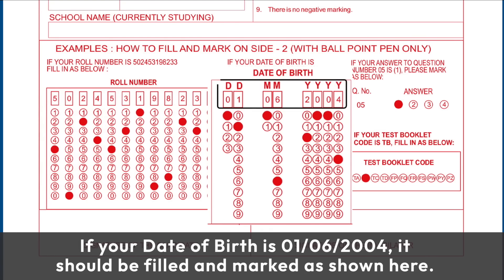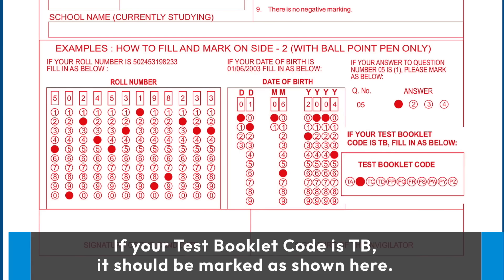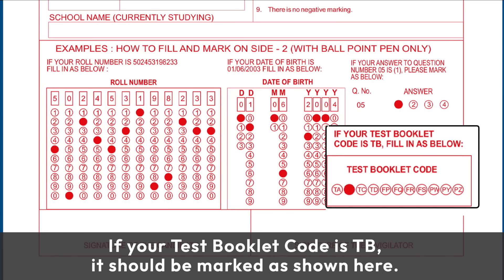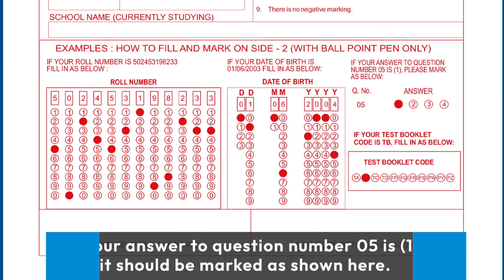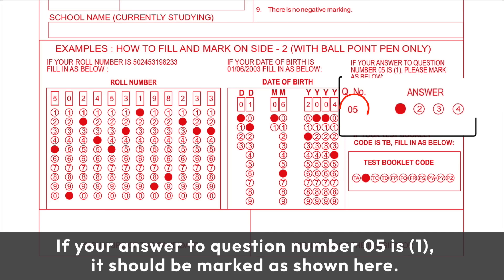If your date of birth is 1st June 2004, it should be filled and marked as shown here. If your test booklet code is TB, it should be marked as shown here. If your answer to question number 5 is option 1, it should be marked as shown here.